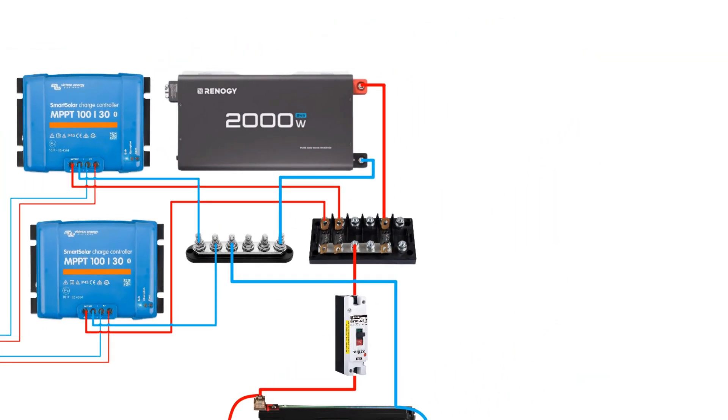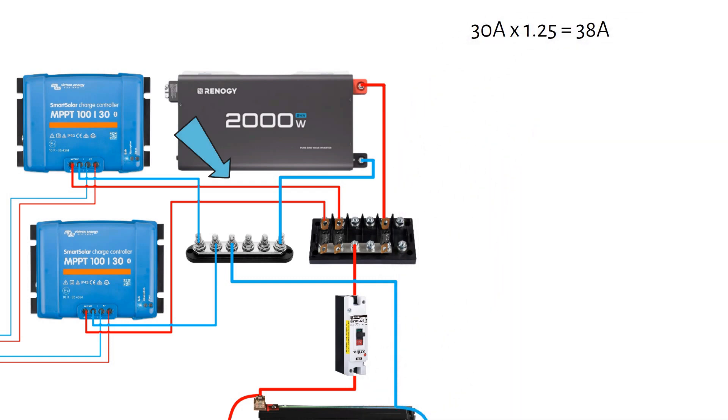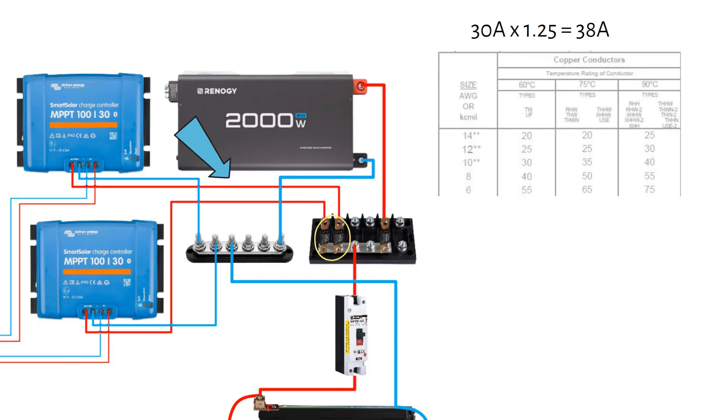From the charge controller to the bus bar the maximum current is 30 amps. With a safety factor that becomes 38 amps. So I use a 40 amp fuse and an 8 gauge or 10mm square cable.